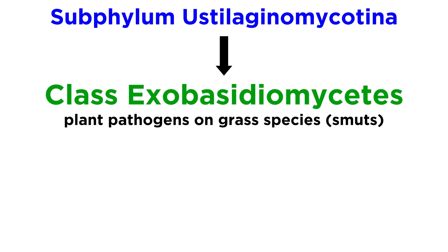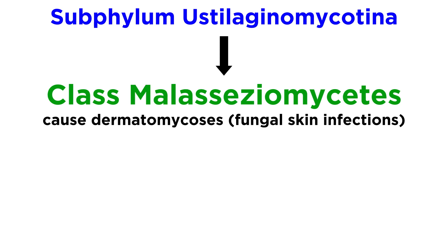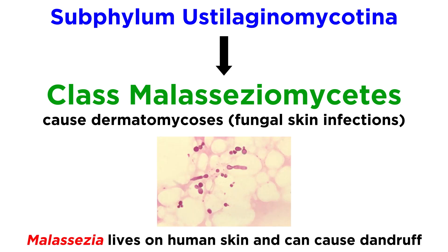Species within the class Exobasidiomycetes also act as plant pathogens on grass species, and thus are considered smuts. A notable species is Tilletia indica, or carnal bunt, which parasitizes wheat, causing kernels of wheat to produce a putrid odor and making products of wheat such as flour taste off-putting. Species within the Malasseziomycetes are known to cause dermatomycoses, or fungal skin infections. A genus within the class Malasseziomycetes, known as Malassezia, lives on human skin, and some species cause problems such as dandruff.